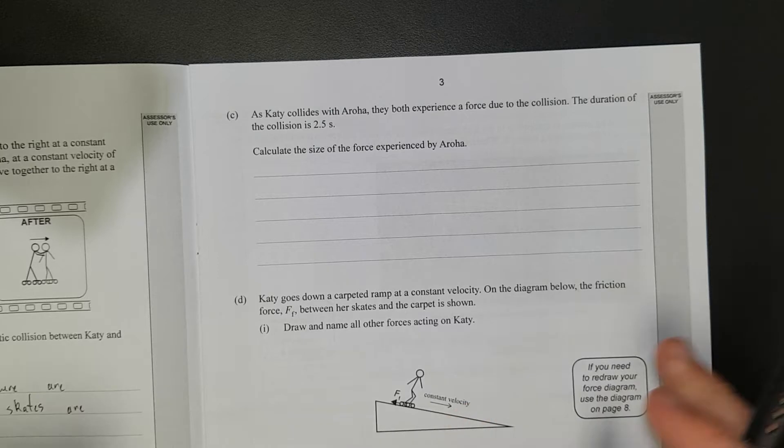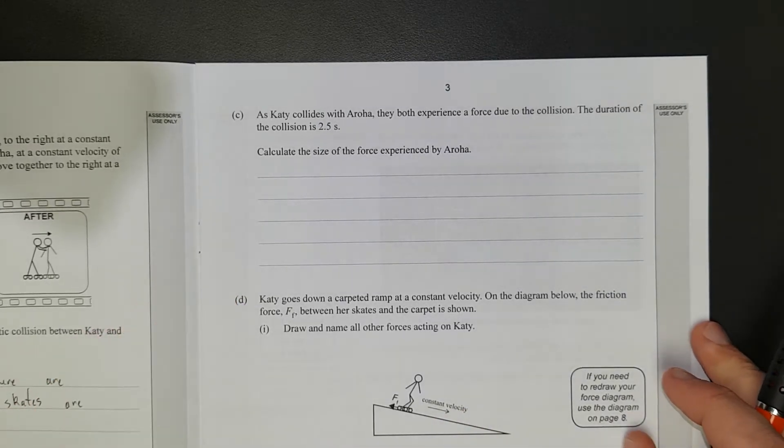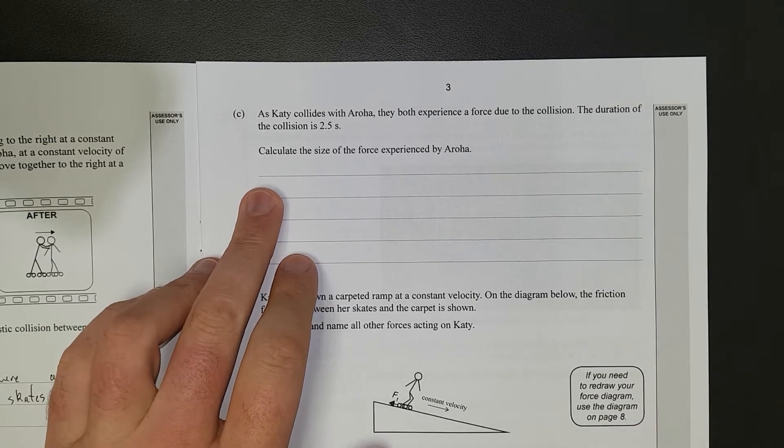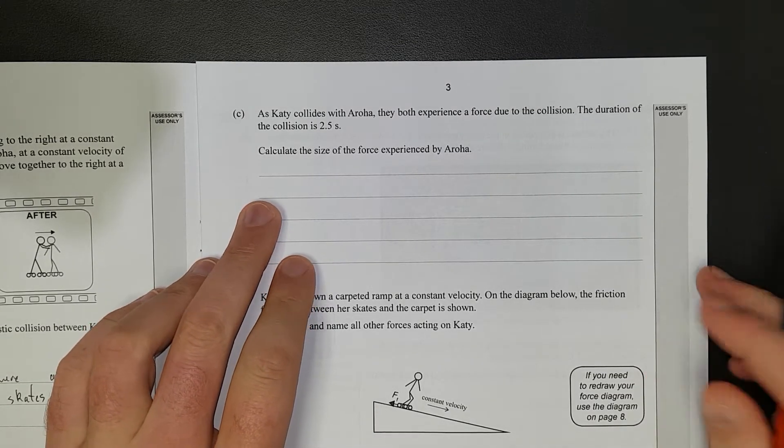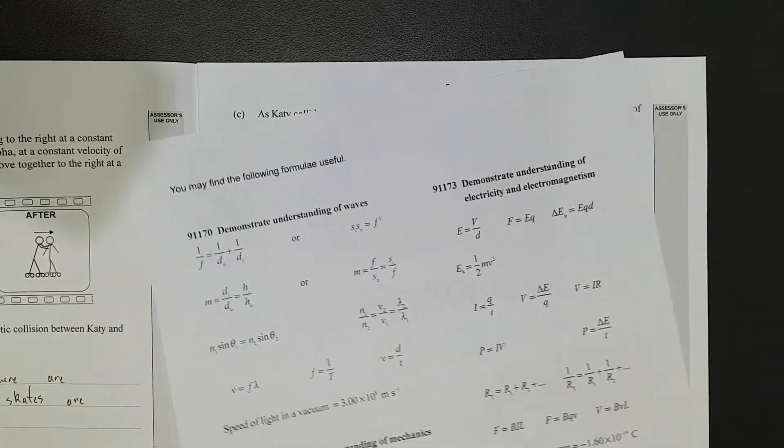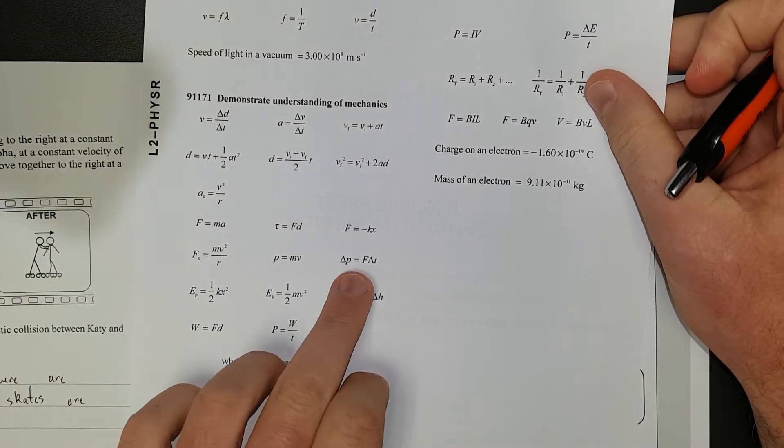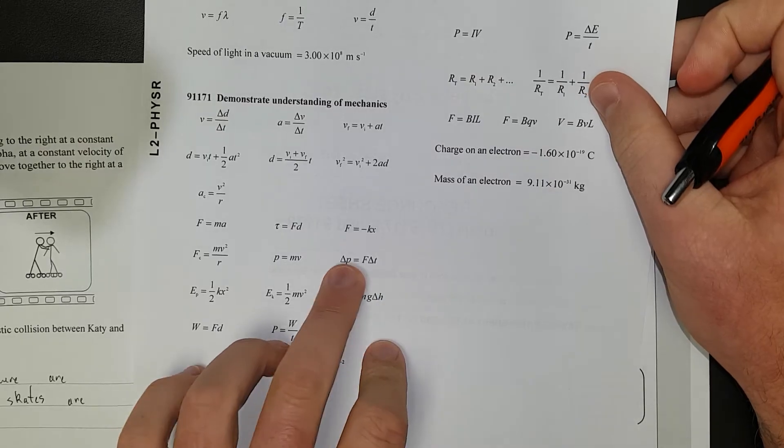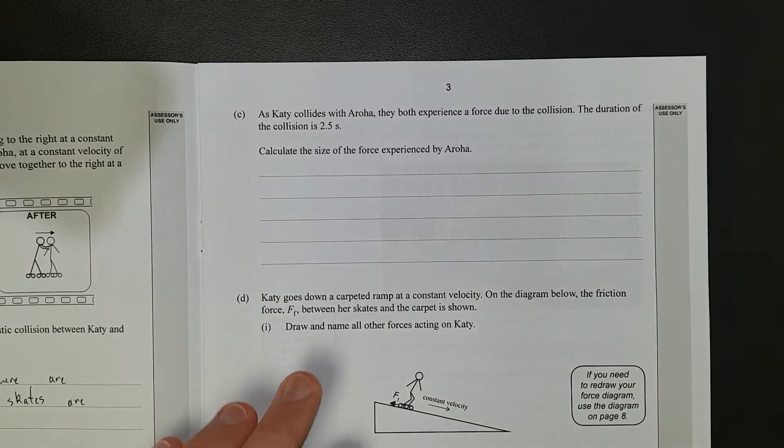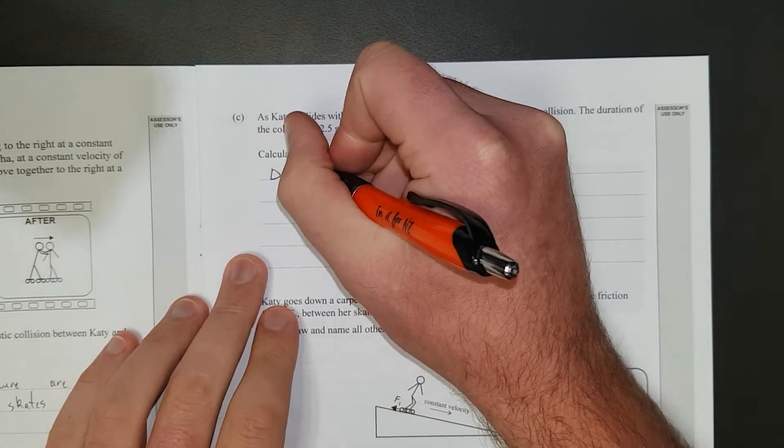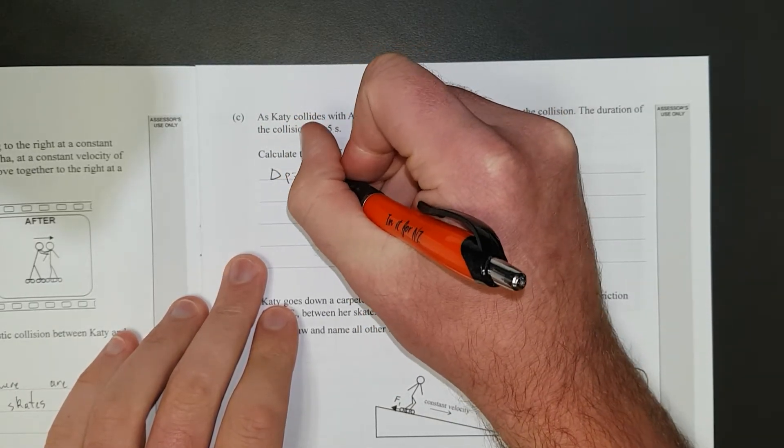Right, next question. As Katie collides with Aroha, they both experience a force due to the collision. The duration of the collision is 2.5 seconds. Calculate the force experienced by Aroha. You can look on your formula sheet if we see it here. We have force, change in time, change in momentum. We'll use that one there, why not? So the change in momentum is equal to the force times change in time.